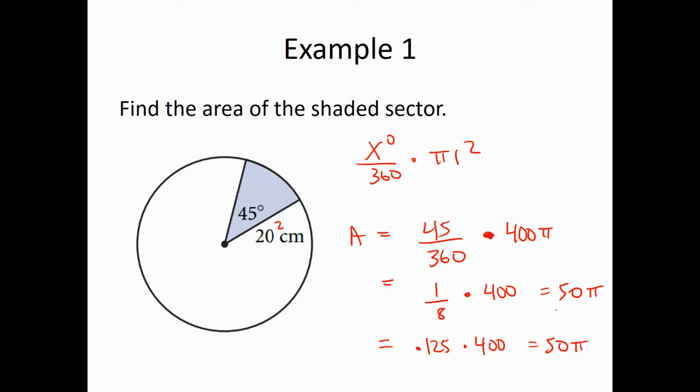So that would be the exact answer, 50 pi. If maybe I ask you for an exact form, like in terms of pi, or if I say round to the nearest whole number or something, then you actually multiply it out. It would be about 157.07. So if I did a whole number, we would just leave it at 157, because the next digit is a 0. So we'd say about 157 square centimeters, or 50 pi square centimeters exactly.